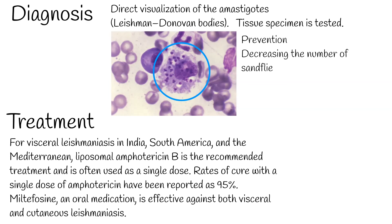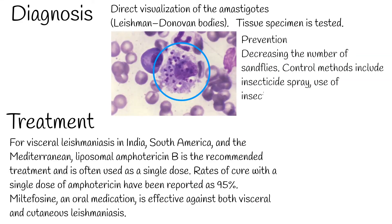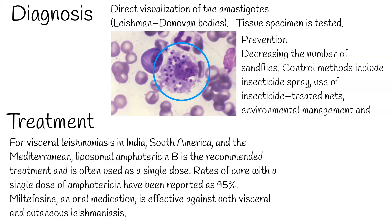Prevention: Vector control helps reduce or interrupt transmission of disease by decreasing the number of sandflies. Control methods include insecticide spray, use of insecticide-treated nets, environmental management, and personal protection.